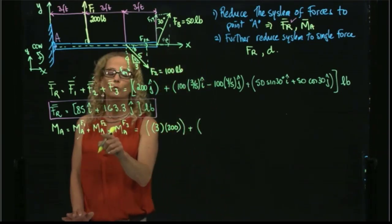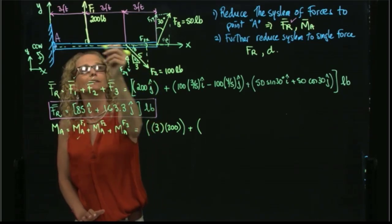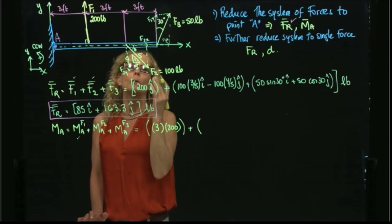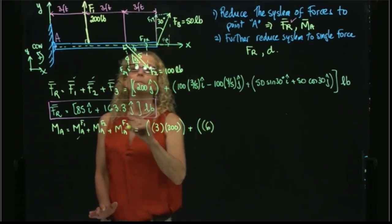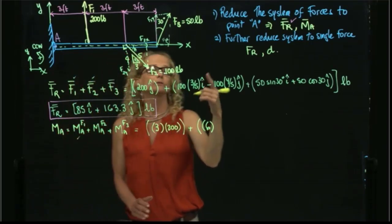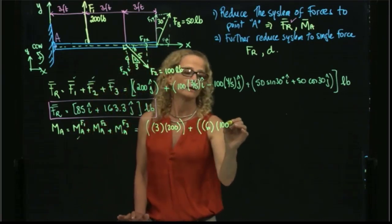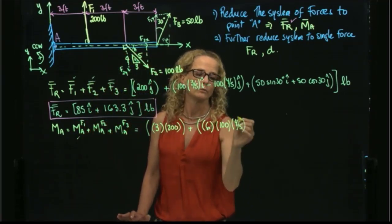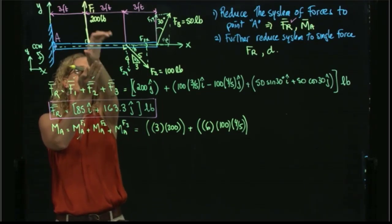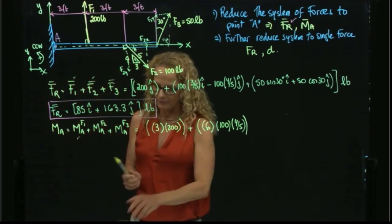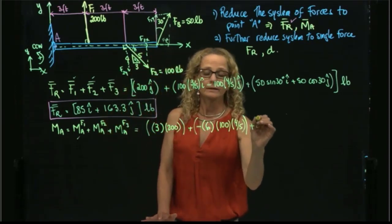For F2, it has two components. The X-component is parallel to the distance and produces no moment. Only the perpendicular Y-component produces a moment. The distance is 6, and the Y-force is 100 times 4/5, which equals 80. Using the right-hand rule, curling fingers from the distance toward the force gives a clockwise direction, so the moment is negative.